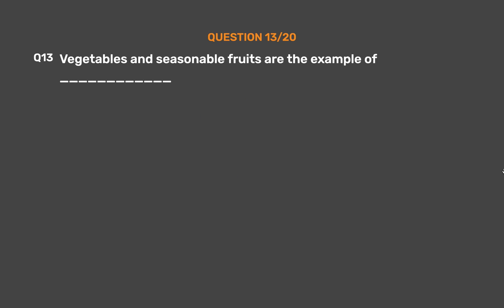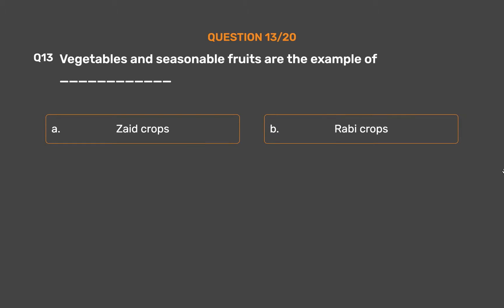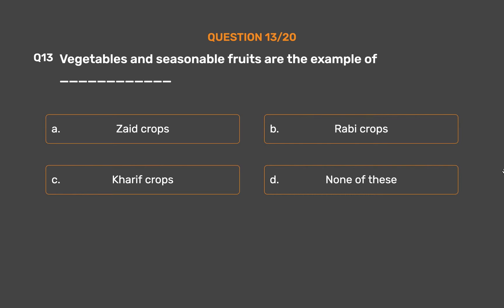Question No. 13: Vegetables and seasonal fruits are examples of ___. Option A: Zaid crops. Option B: Rabi crops. Option C: Kharif crops. Option D: None of these.